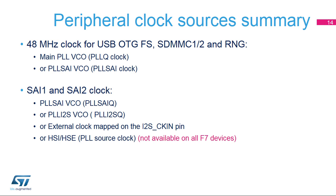Serial audio interfaces, USB OTG-FS, random number generator, and SDMMC interfaces have independent clock sources that are generated from the different PLL outputs. In addition to PLL outputs, the serial audio interfaces clock can be generated from an external clock mapped on the I2S-CKIN pin, or from the HSI or HSE clocks if this feature is available.